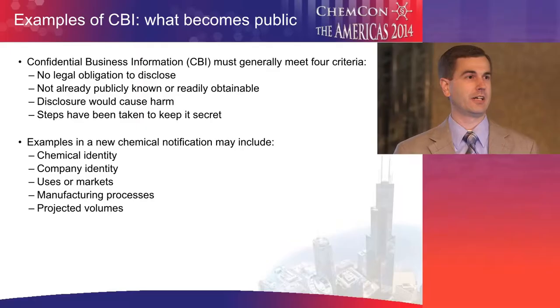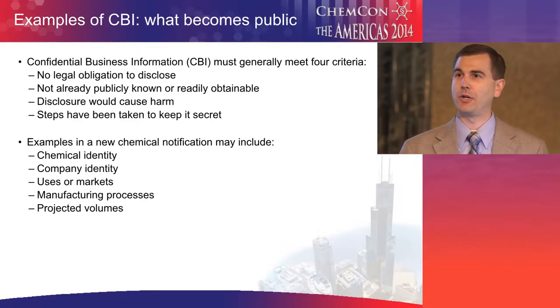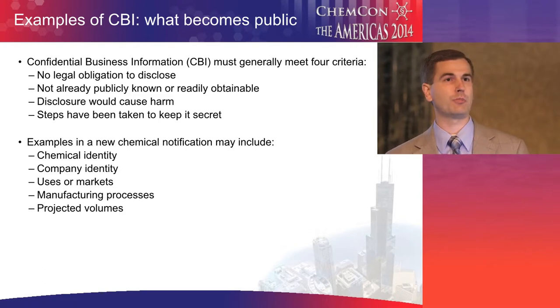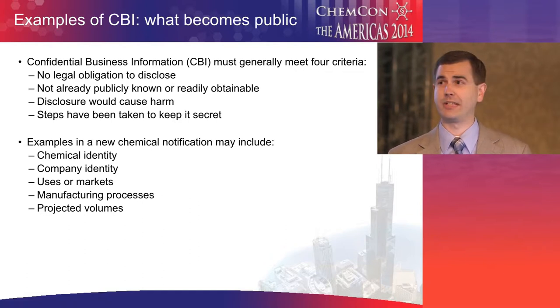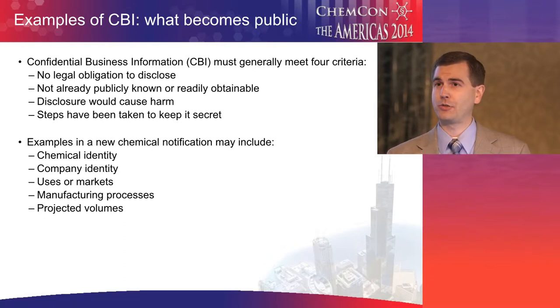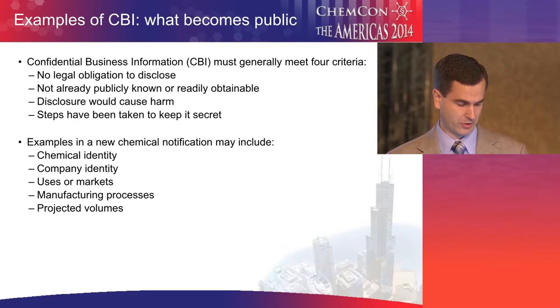As we think about information that goes into new chemical notifications — and Karen provided a really good list of that at the end of her presentation — there are several types of potentially sensitive information. Chemical identity is a primary example, but you're also often required to describe your manufacturing process, your anticipated manufacturing or import volumes, which could be an indication of what you expect your market size to be, information on who's processing or using your chemicals downstream, and lists of your customers. That's very sensitive information as well.